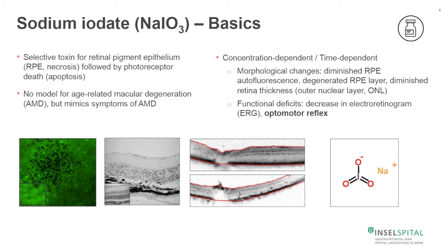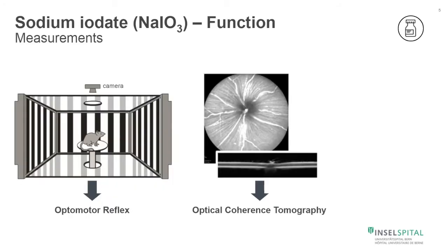All together, these morphological changes in the outer retina lead to functional deficits, and these functional deficits could be measured in an electroretinogram but also by using the optomotor reflex. We used the Optodrum from Stritec in order to follow the development of visual function and compare that over time with the images we get from optical coherence tomography.